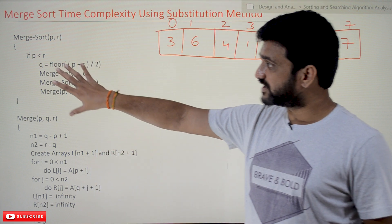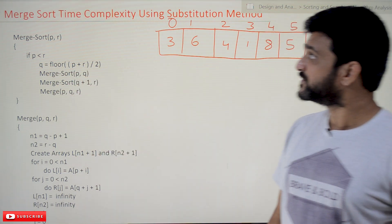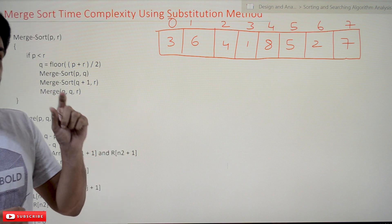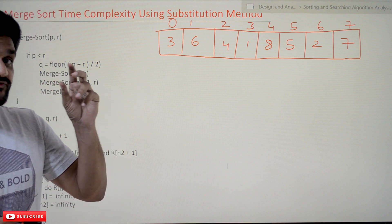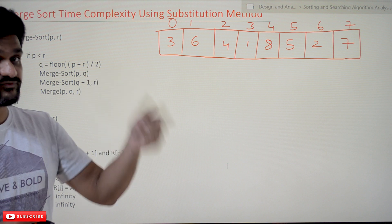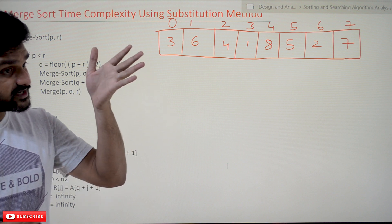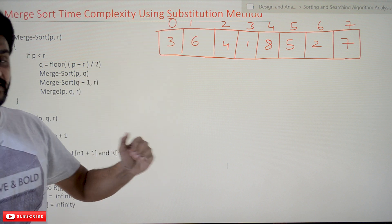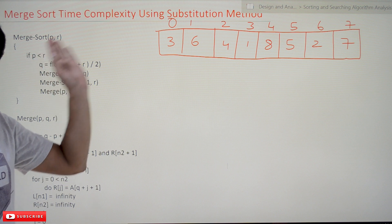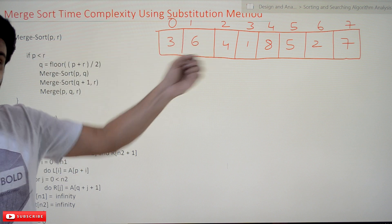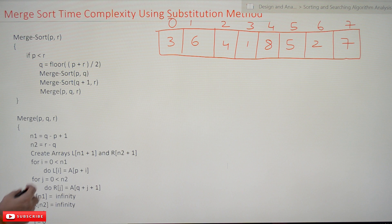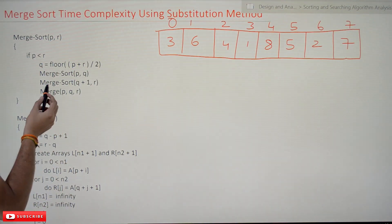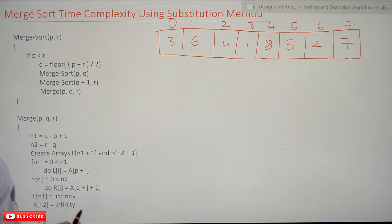Now coming to this class, we will try to understand the efficiency of the merge sort algorithm. We have already discussed that in order to find the efficiency of recursive algorithms, we have to find the recurrence relation first. That recurrence relation can be solved by using two methods. One of the methods is the substitution method. In the next video we are going to understand the time complexity of merge sort using the master's method as well.